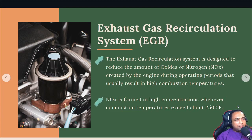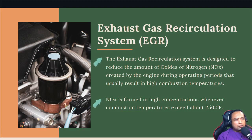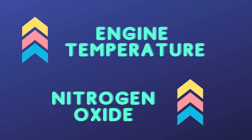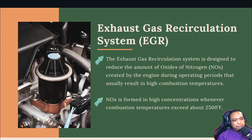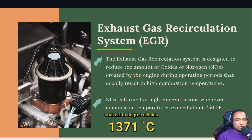Next we have the Exhaust Gas Recirculation system, or EGR. You can see the valve here. Its function is to reduce the amount of nitrogen oxide created by the engine during operation, which usually results from high combustion temperatures. Whenever the temperature in the combustion chamber increases, the volume of nitrogen oxide increases. The EGR reduces the engine temperature, so automatically the volume of nitrogen oxide decreases. Nitrogen oxide is formed in high concentration when combustion temperature exceeds about 2,500 degrees Fahrenheit.